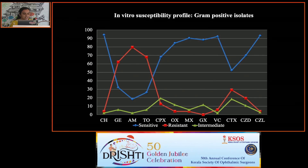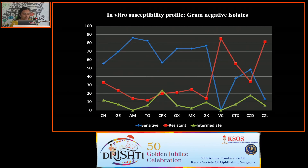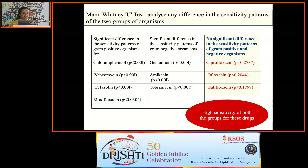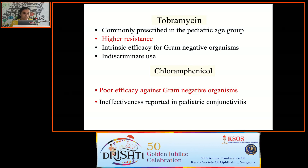For gram-positive organisms, resistance was highest for Aminoglycosides, including Tobramycin, which is a frequently prescribed drug in the pediatric age group. For gram-negative organisms, resistance was highest for Vancomycin and Cephalosporins. The Mann-Whitney U test showed no significant difference in the sensitivity pattern of both groups of organisms for Ciprofloxacin, Ofloxacin, and Gatifloxacin. Tobramycin showed higher resistance, possibly because of its indiscriminate use.